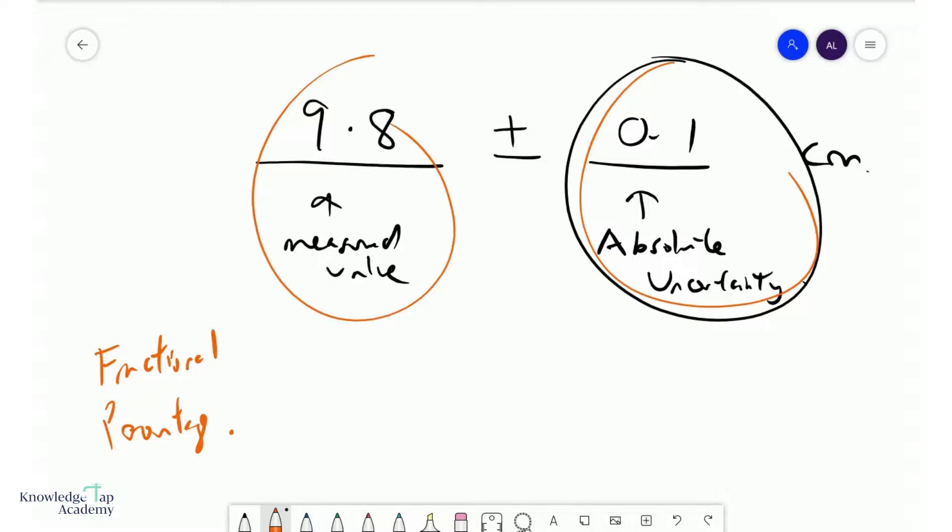So in this case, or usually we call this delta x and x. So the fractional or percentage uncertainty is simply delta x over x. So in this case, that would be 0.1 over 9.8.